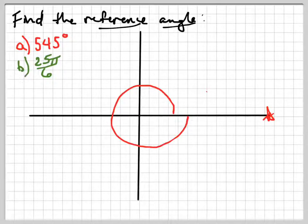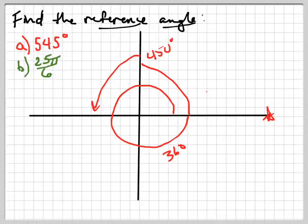So, there's 360. I'm just counting in my head 360. There's another 90, which is 450. There's another 90, which is 540. And so, how much more do I have to go? Five more.